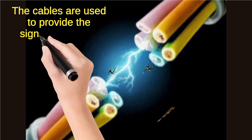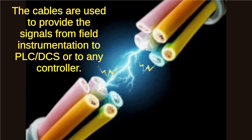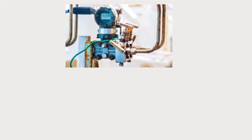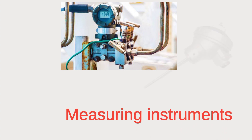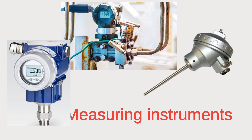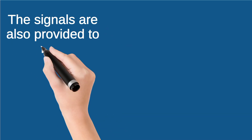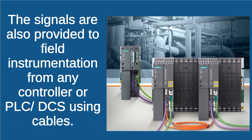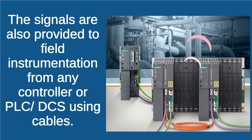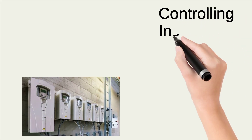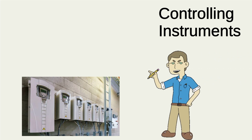Cables are used to provide signals from field instrumentation. These are some measuring instruments and their signal is transmitted by a cable. Cables are also used to provide signals from any controller to field instruments. Normally the signal is fed from a PID or PLC controller. These are some controlling instruments and the signal fed to them is transmitted by the cable.